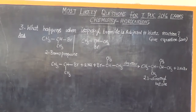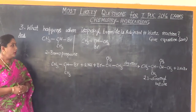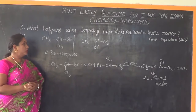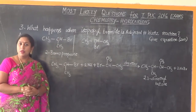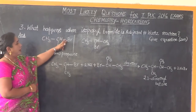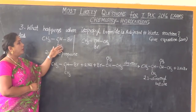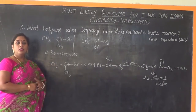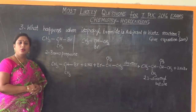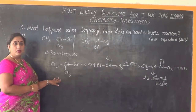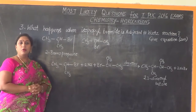Now let us understand the application of Wurtz reaction. Previously we covered the direct question on Wurtz reaction. Now here is another examiner choice question: what happens when isopropyl bromide is subjected to Wurtz reaction — give the equation? This type of question may appear instead of a direct question, and it is also asked for two marks. I have already written the equation; you are required to write the equation and the explanation.